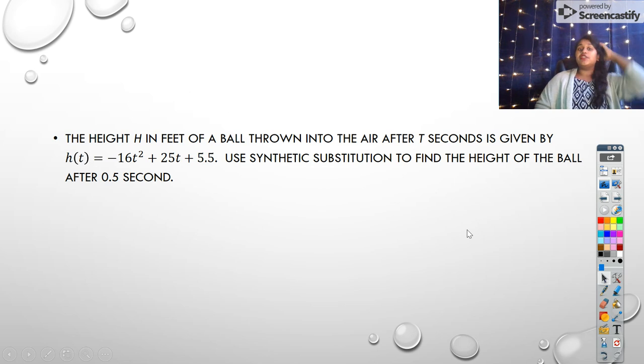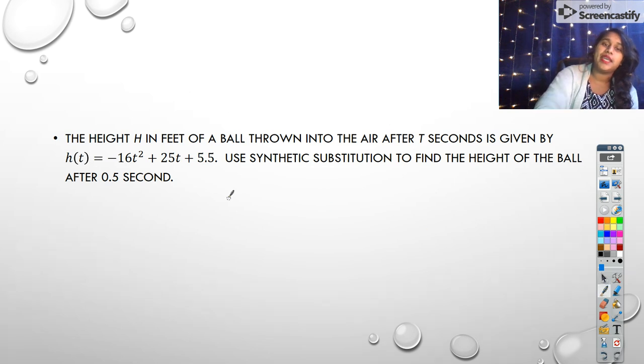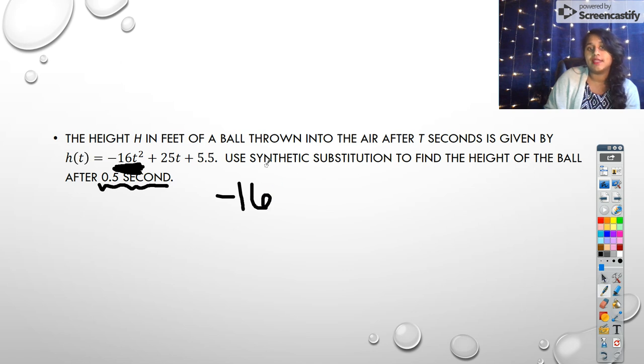Okay. The height h in feet of a ball thrown into the air after t seconds is given by this formula, using synthetic substitution to find the height of the ball after 0.5 seconds. So again, we could use synthetic division, synthetic substitution and plug that in, or I can recognize that this is simply a quadratic. So I can go ahead and plug in that one half. And that's what synthetic substitution is telling me. That really just means plug it in.